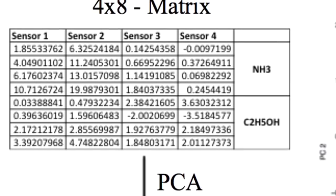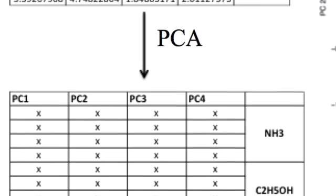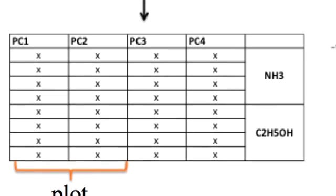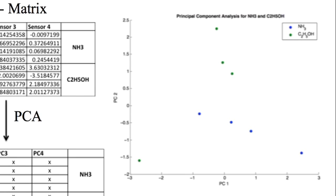If we now use the principal component analysis to illustrate the matrix of all normalized responses in a meaningful and clear arranged way, we get a two-dimensional plot with the principal components of the two test gases in certain regions. Every measurement with an unknown gas now can be included to the PCA and we are able to distinguish between ammonia and ethanol depending on the location of the new data point.